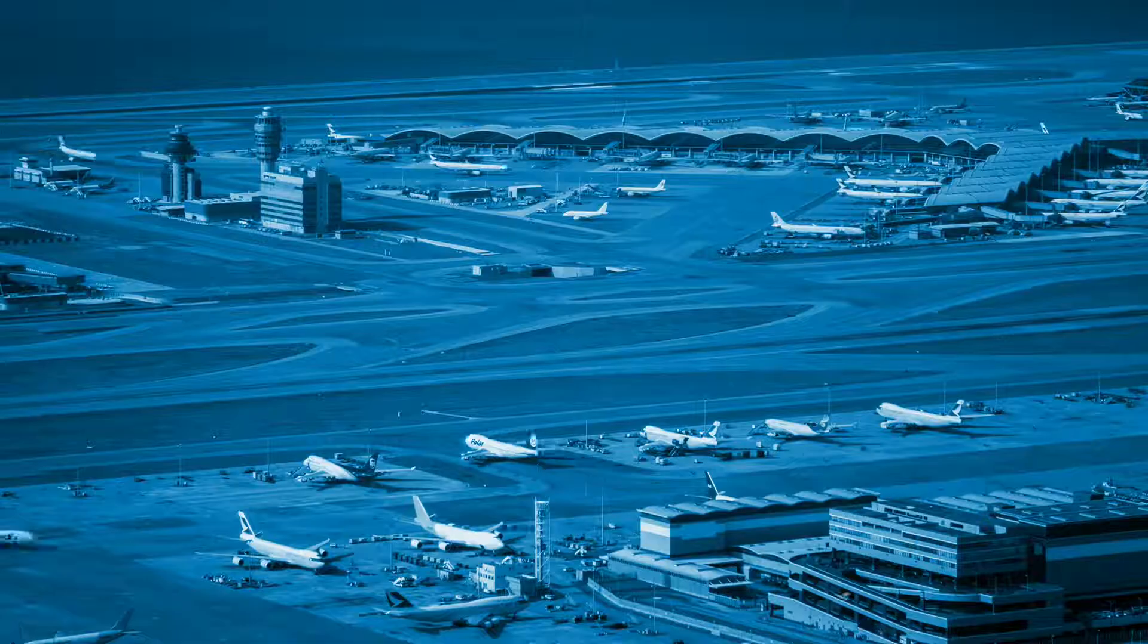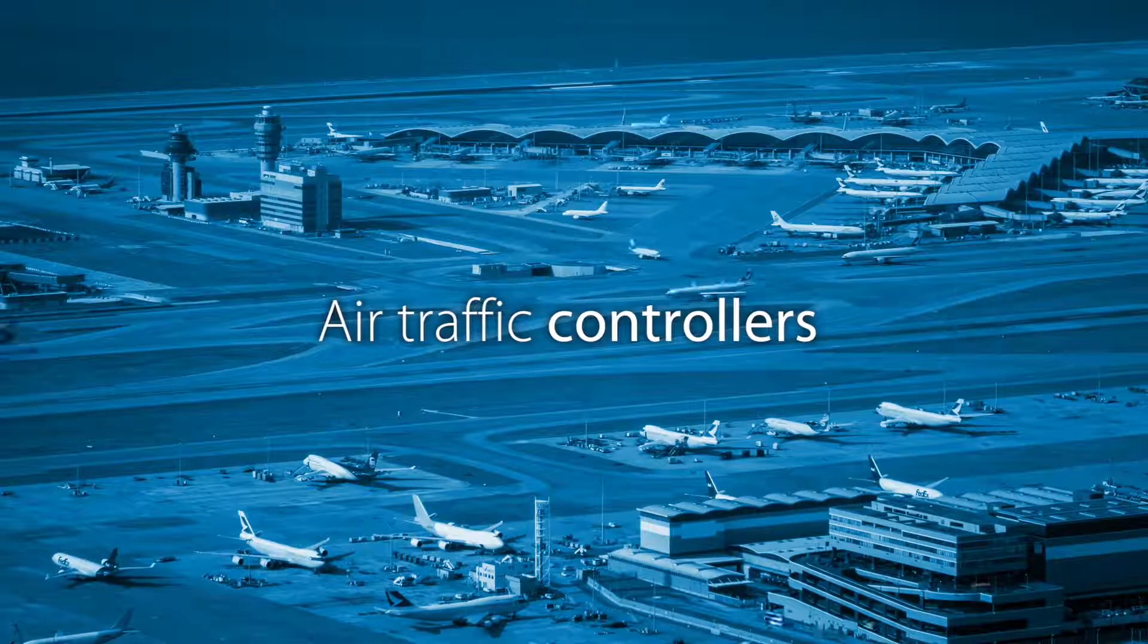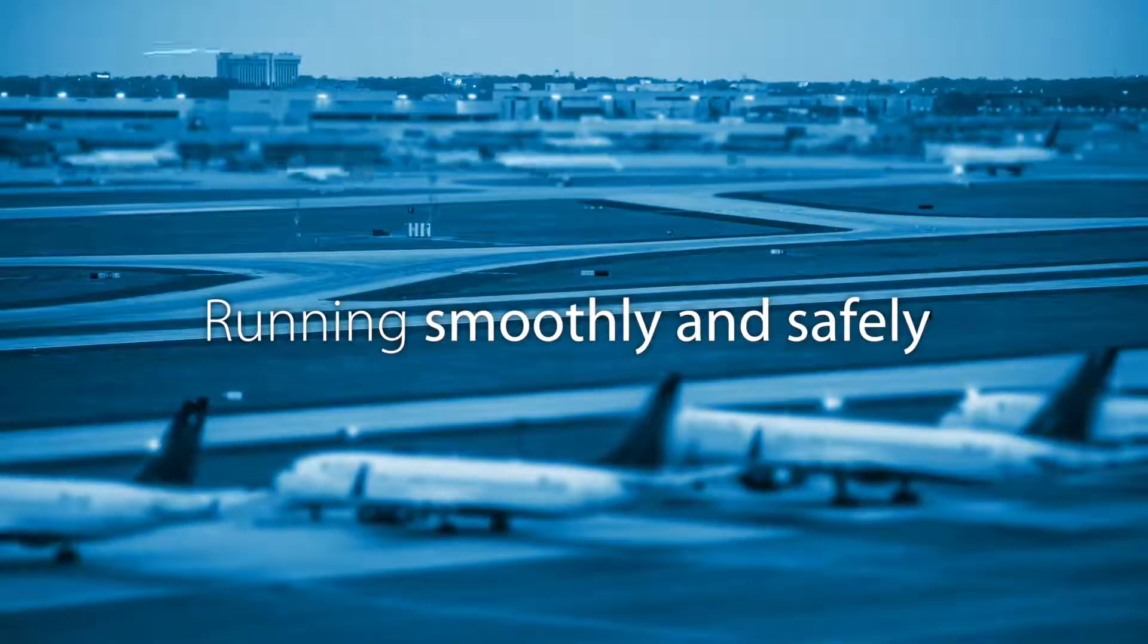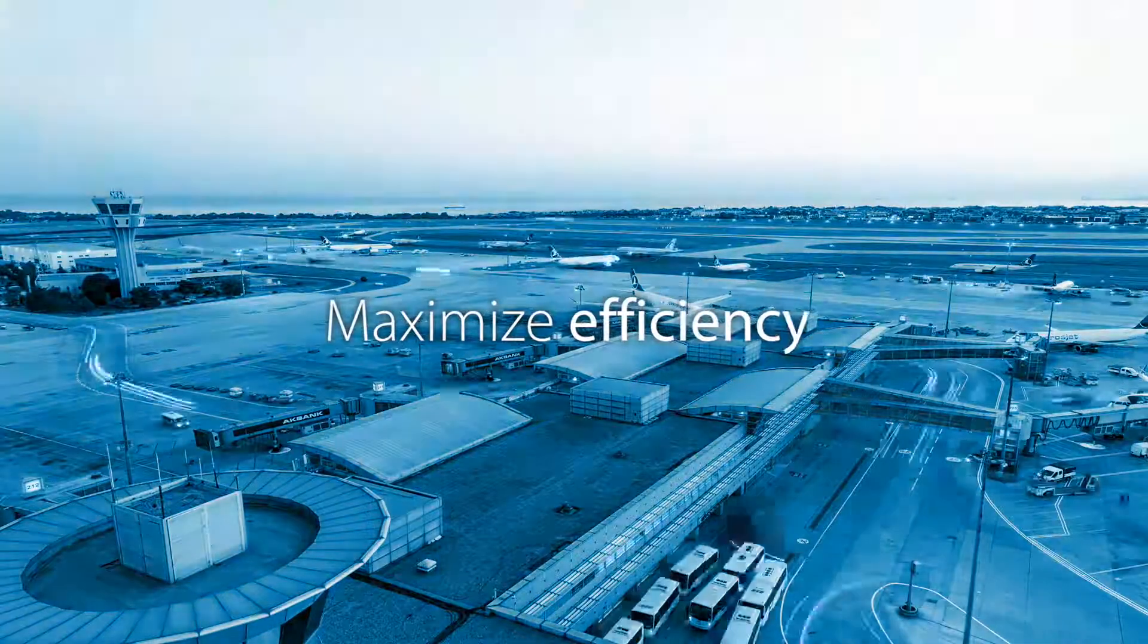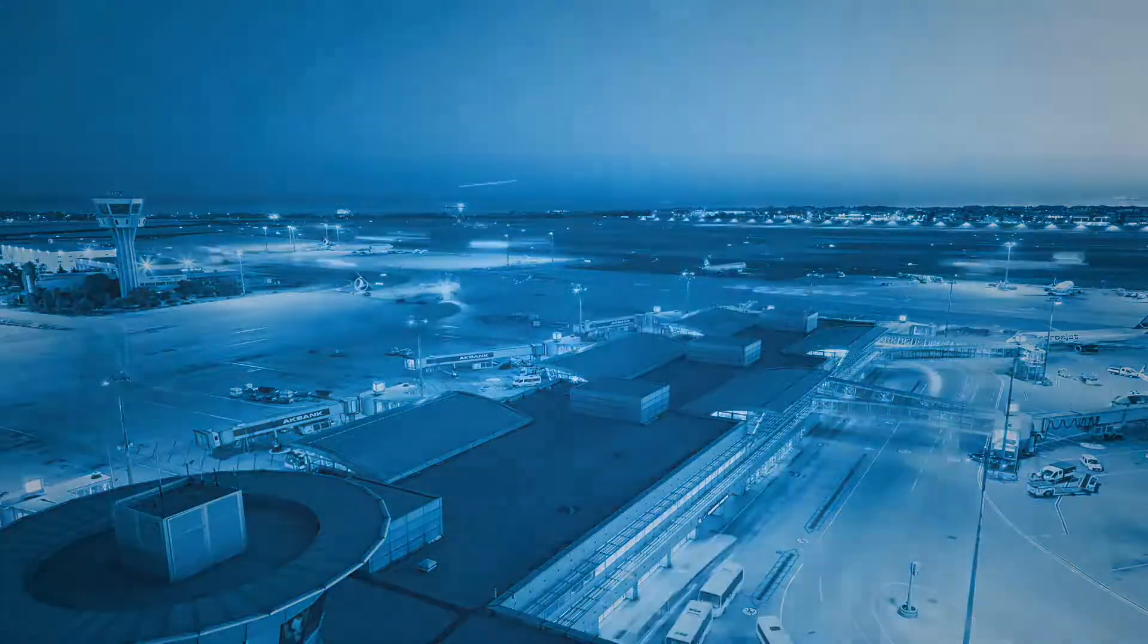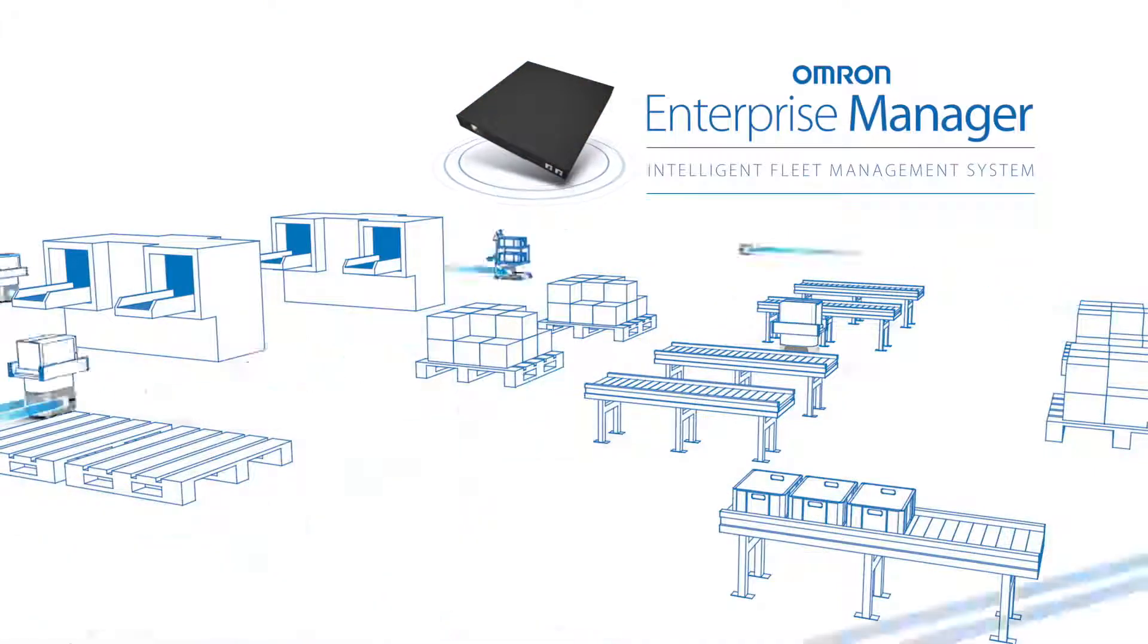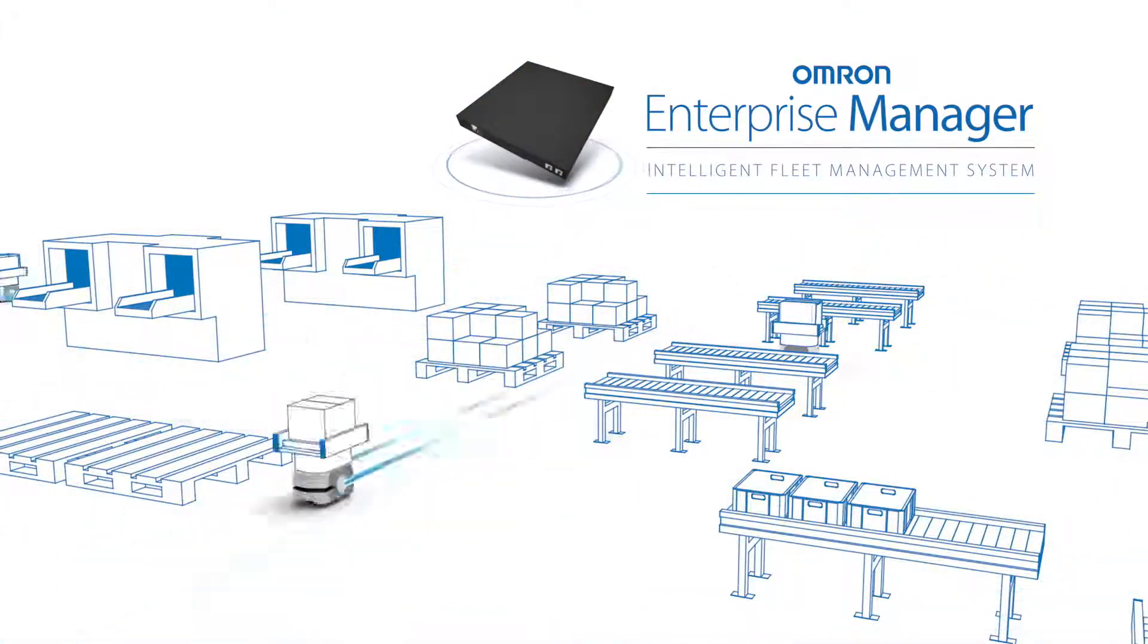Imagine what our skies and airports would look like if we didn't have air traffic controllers. Controllers keep everything running smoothly and safely and maximize the efficiency of the entire system. That's the idea behind OMRON Enterprise Manager, our industry-leading intelligent fleet management system for mobile robots.